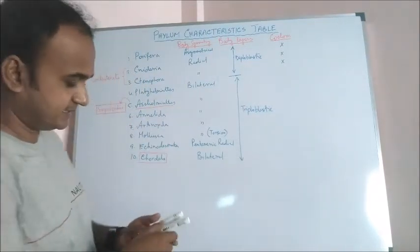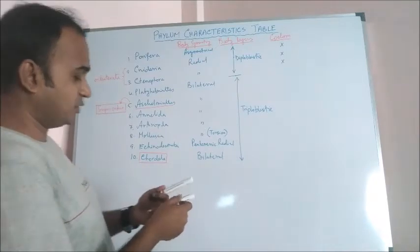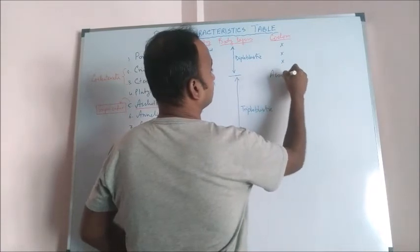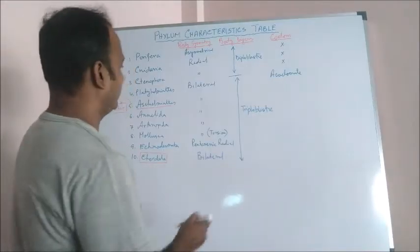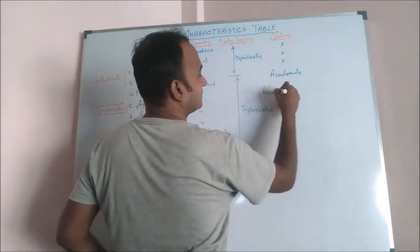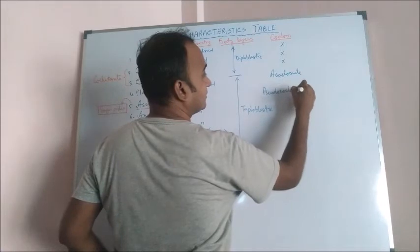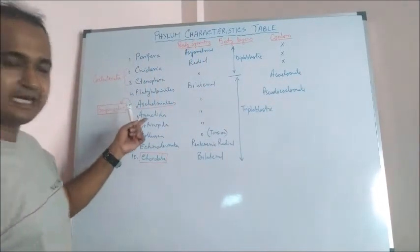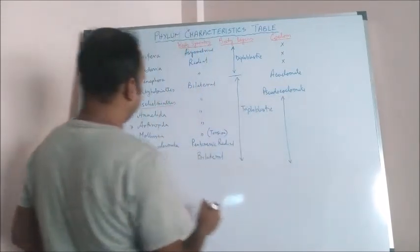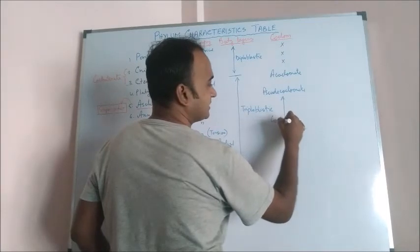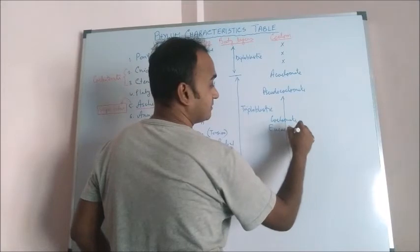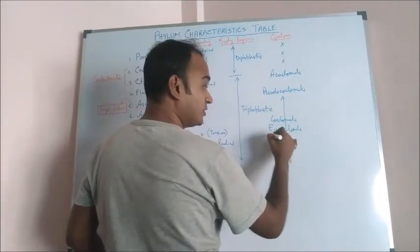In Platyhelminthes acoelomate, Aschelminthes pseudocoelomate, and rest of them are coelomate or eucoelomate or true coelomate.